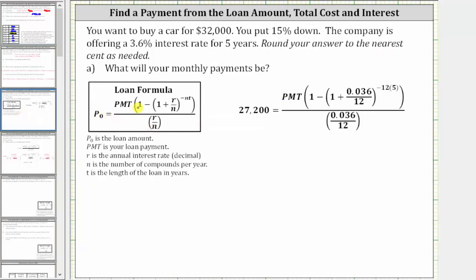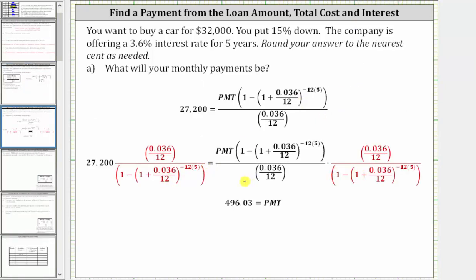Using the loan formula, P-sub-zero is 27,200. PMT is what we are solving for. R as a decimal is 0.036, located in the formula. The number of compounds per year is 12, appearing in the denominator, and the exponent is negative n times t, which is negative 12 times 5. We solve this equation for PMT by multiplying both sides by the reciprocal of the fraction. The reciprocal simplifies the fraction to one and the quantity to one, leaving PMT on the right side of the equation.